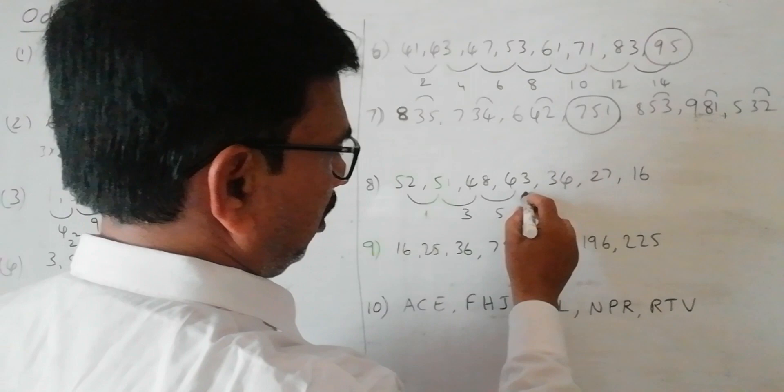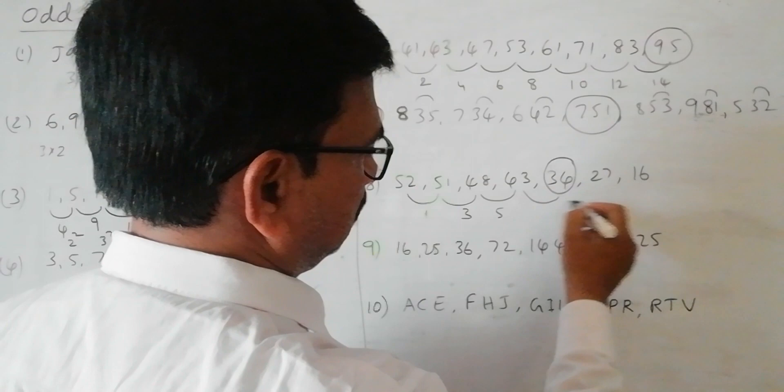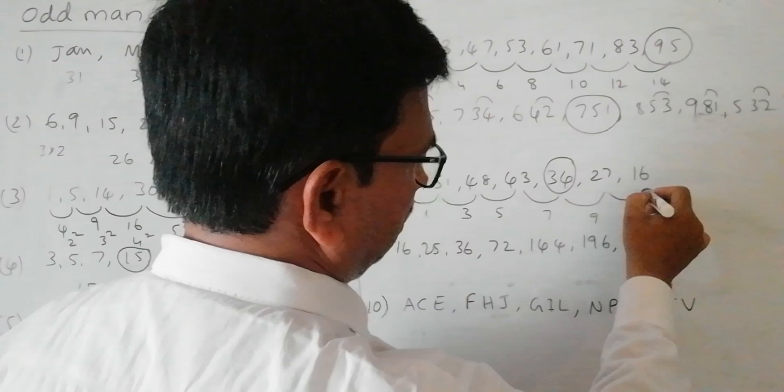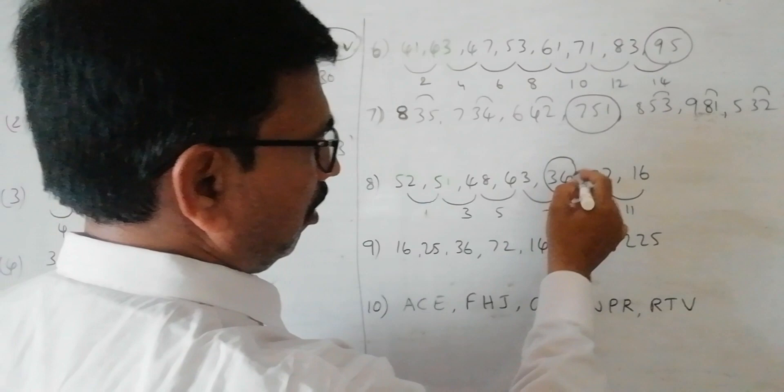Then 36 minus 9 is 27, and 27 minus 11 is 16. So except this number, all other numbers are following the logic. So 34 is the odd one.